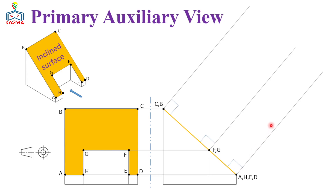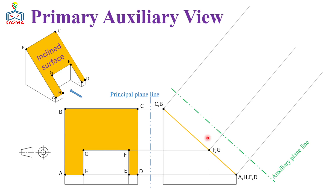Once we get all those necessary points, we can project a perpendicular line from this slanted line. By considering the space we need, we can draw the auxiliary plane line. The auxiliary plane line should be parallel to this edge view. We can measure the distance from the principal plane line to each point and then transfer that dimension with reference to the auxiliary plane line. Starting from the lower part, we have four points: A, H, E, and D. We can measure the distance from this reference plane line to these four points.